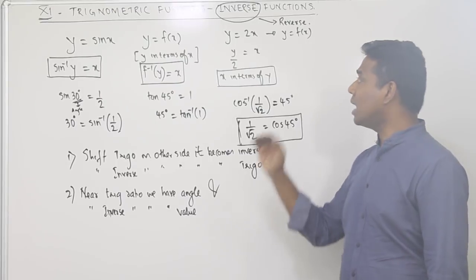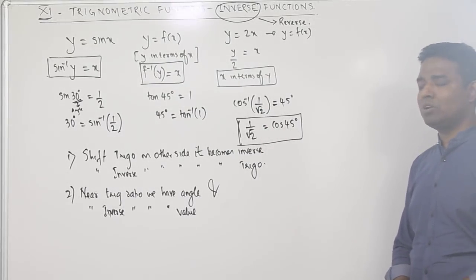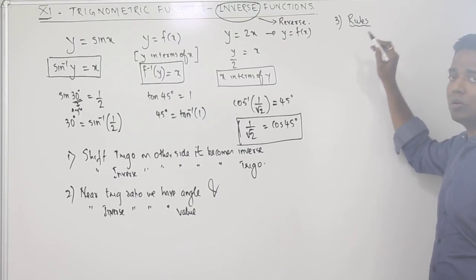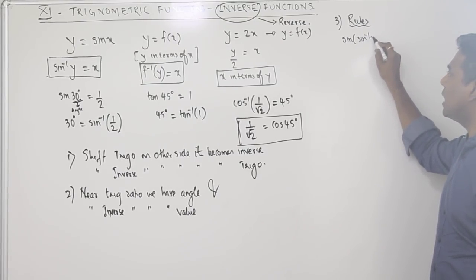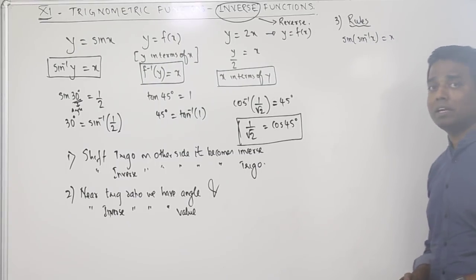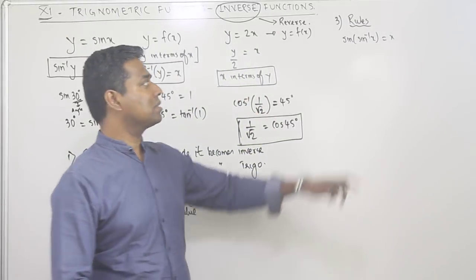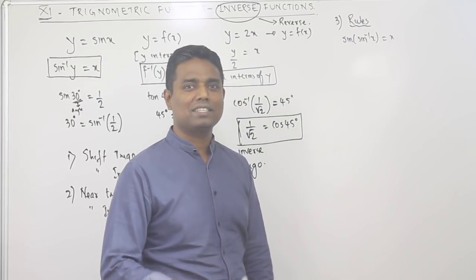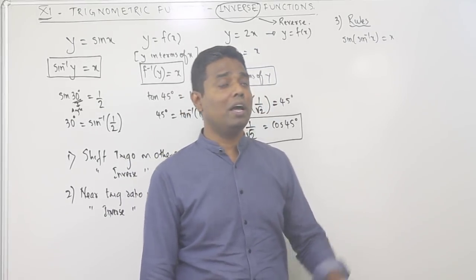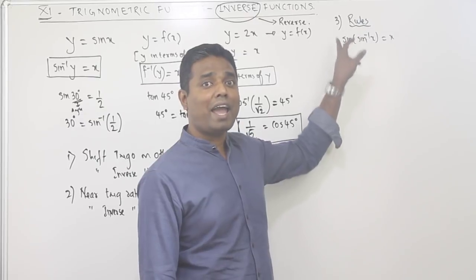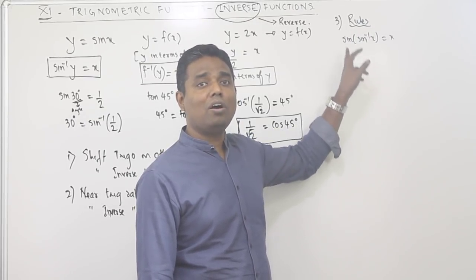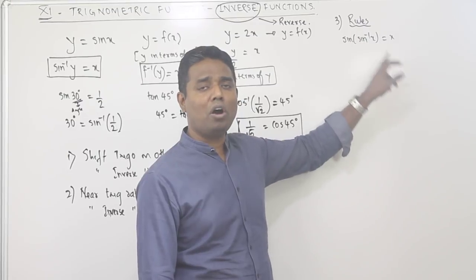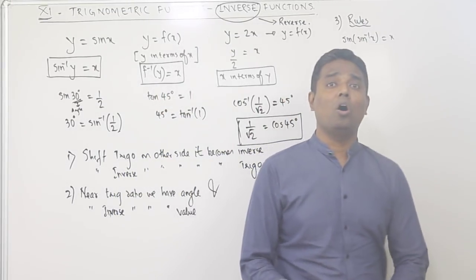Solving problems becomes very simple with this knowledge. Apart from this, there are certain rules that make problems easy. First rule: sine of sin inverse x equals x. The trig function and its inverse nullify each other. The same applies for all ratios — cos of cos inverse x is x, tan of tan inverse x is x, sec of sec inverse x is x, cosec of cosec inverse x is x, and cot of cot inverse x is x.